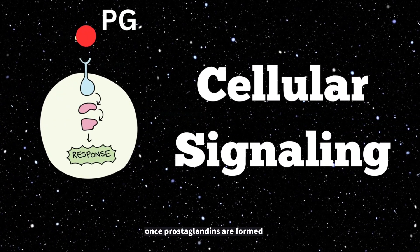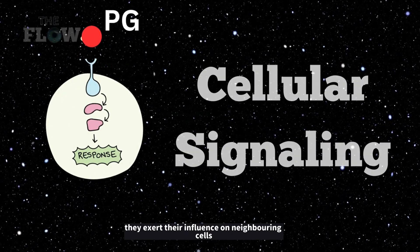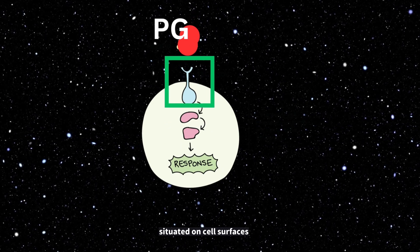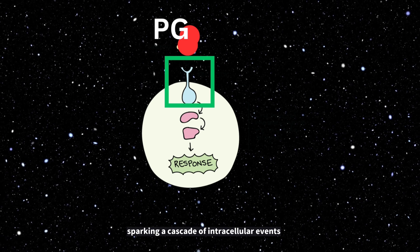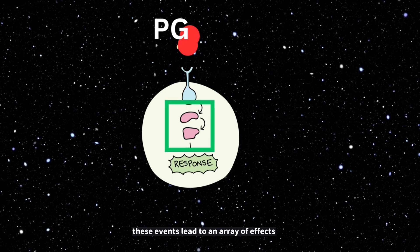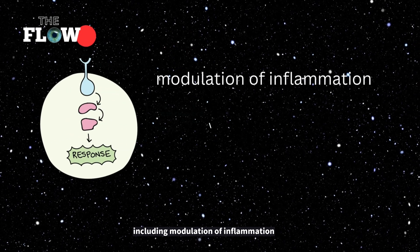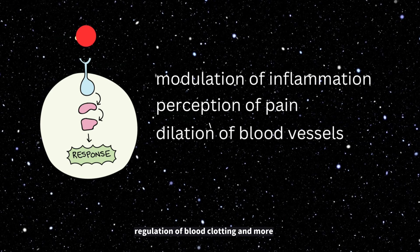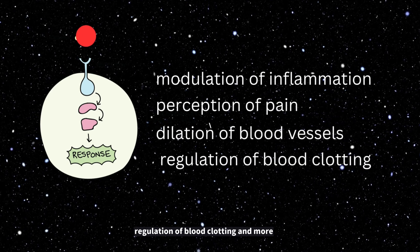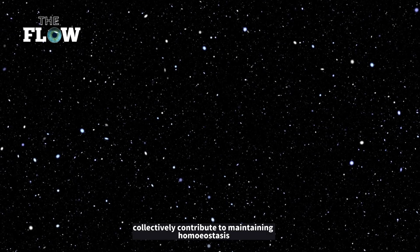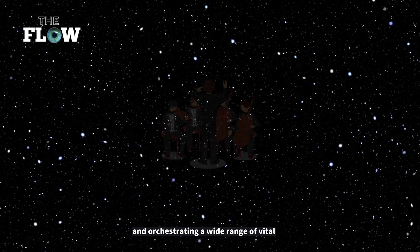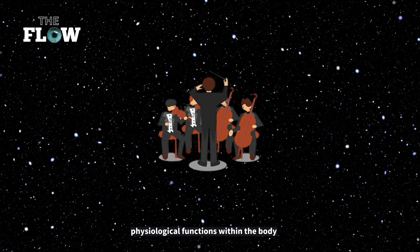Cellular signaling: once prostaglandins are formed, they exert their influence on neighboring cells by engaging with specific receptors on cell surfaces, sparking a cascade of intracellular events. These events lead to effects including modulation of inflammation, perception of pain, dilation of blood vessels, and regulation of blood clotting. By overseeing these intricate processes, COX enzymes and the prostaglandins they produce contribute to maintaining homeostasis, responding to injuries, and orchestrating vital physiological functions.